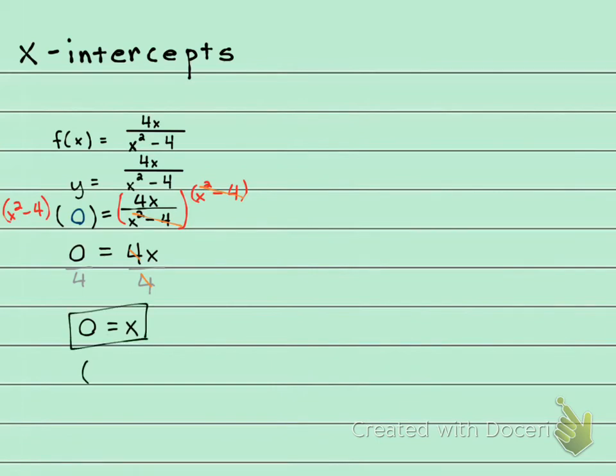So my x-intercept, when I plug in a 0 for y, I get a 0 for x. Okay, now we already found this when we did our y-intercept, but we have to check to make sure there's not more than one x-intercept.